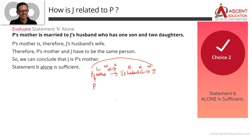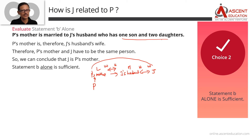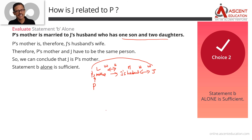So J is related to P as P's mother. Now consider the alternate wording: 'What is the relationship between J and P?' If the answer could be mother-son or mother-daughter, we would not be able to give one unique answer. But 'How is J related to P?' can be answered definitively: J is the mother. So Statement B alone is sufficient, and the answer option is 2.